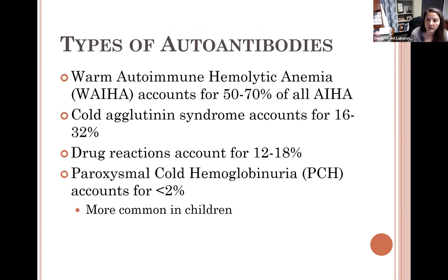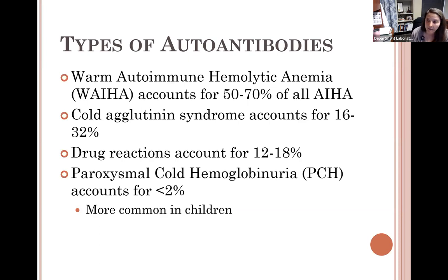Types of autoantibodies: warm autoimmune hemolytic anemia is what blood bank will most commonly encounter, accounting for about 50 to 70% of all AIHA. Cold agglutinin antibodies are present in fewer cases — 16 to 32%. Cold agglutinins act as more of a hindrance in blood bank; they can cause discrepancies in your ABO back-type since they react at room temperature.